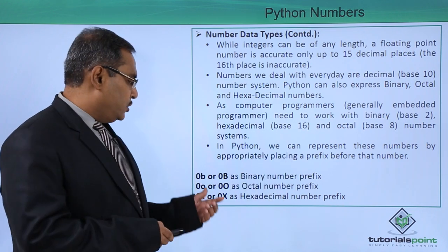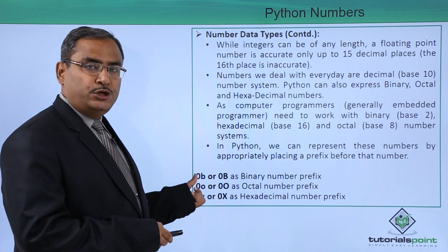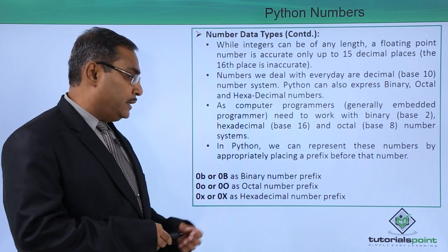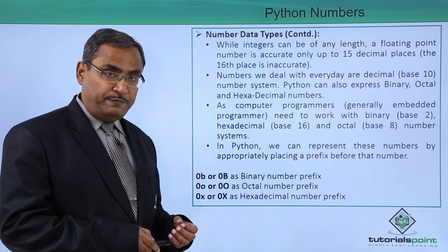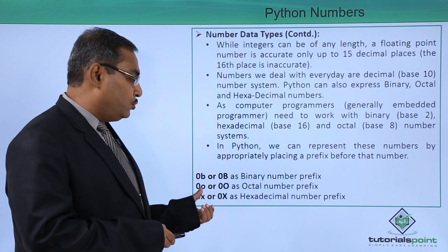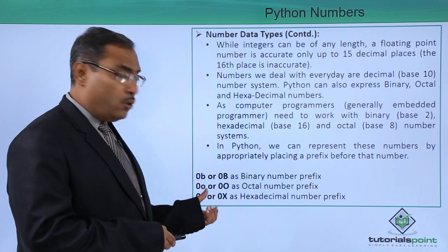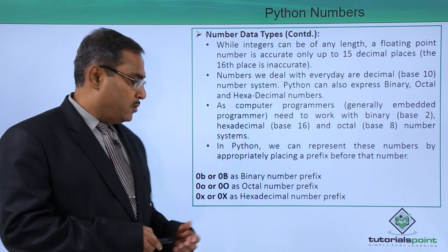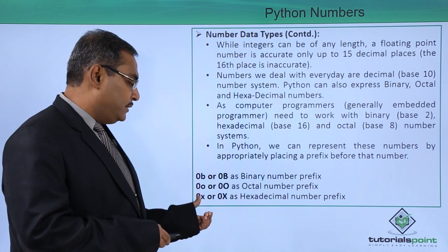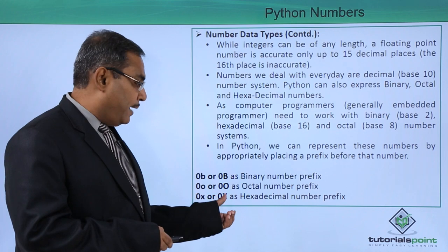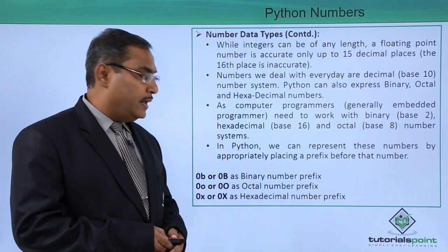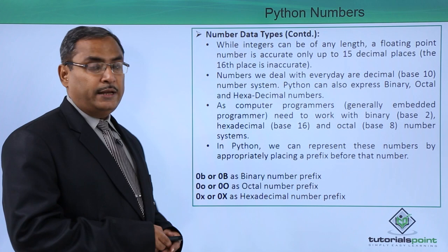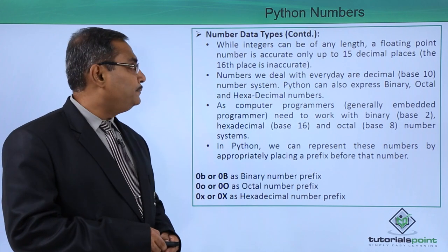The prefixes are: 0b or 0B for binary numbers, 0o or 0O for octal numbers, and 0x or 0X for hexadecimal numbers. These are the prefixes we have to represent the respective number systems.